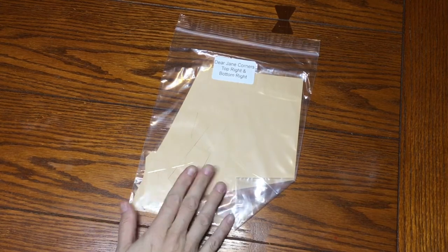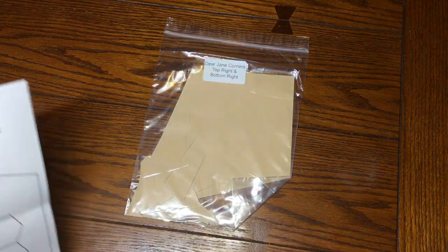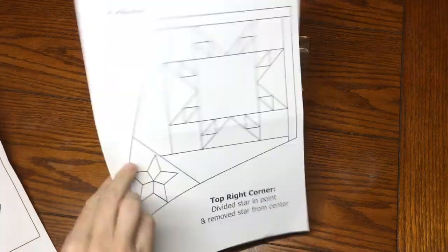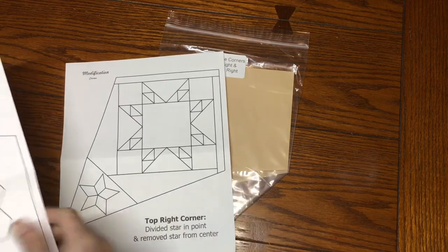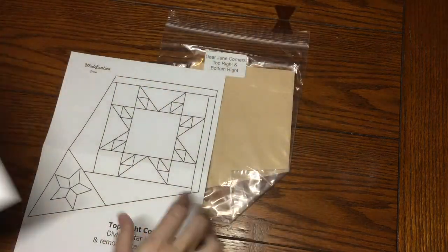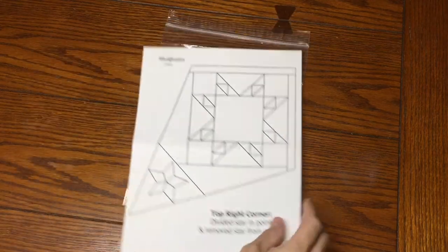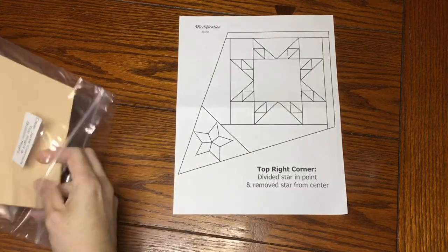Now we're going to do the other bag, which is the right-hand side. And I had flipped over this paper, and so we actually have a modification for the top right corner. But the bottom right is already on here, so I'm going to work from this. And I'm going to dump out my bag.